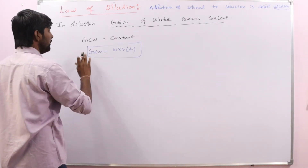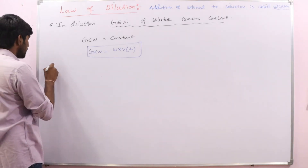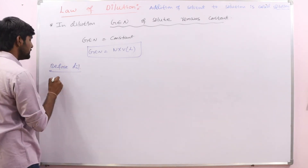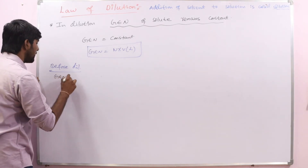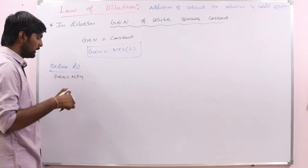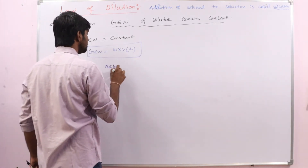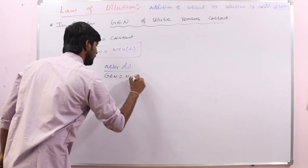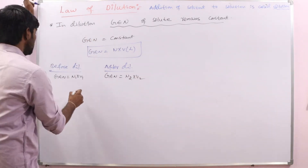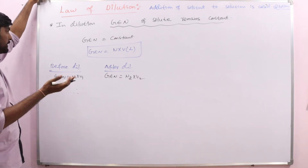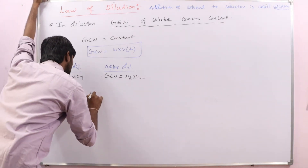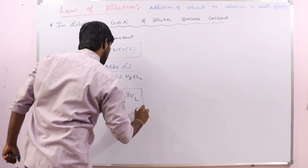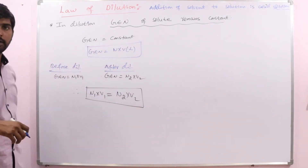So GEN = N × V in litres. Before dilution: GEN = N1 × V1. After dilution: GEN = N2 × V2. Since the number of equivalents of solute is the same before and after dilution, we can write N1 × V1 = N2 × V2. This is the law of dilution when concentration is expressed in normality — N1V1 for the concentrated solution, and N2V2 for the dilute solution after addition of solvent.